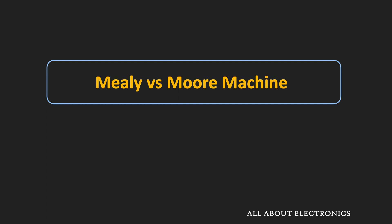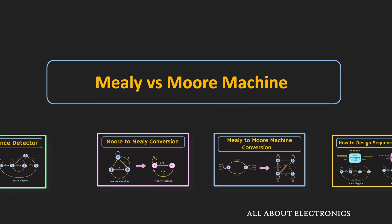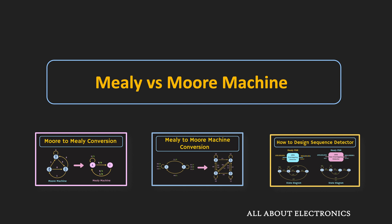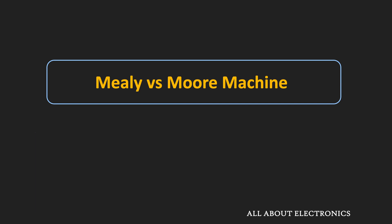Earlier in this series of videos, we understood what a finite state machine is. We also understood how to design the Mealy and the Moore machine, and we have seen how to convert the Mealy machine to the Moore machine and vice versa. So in a way, we already know about these machines. In this video, let us summarize the differences between the Mealy and the Moore machine.